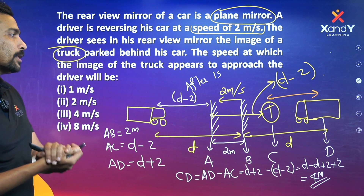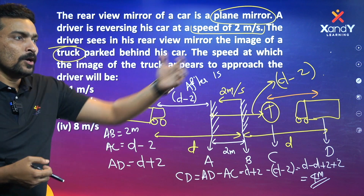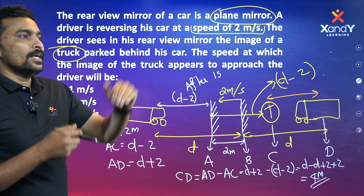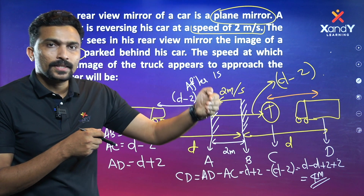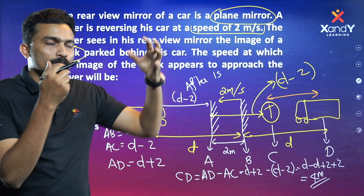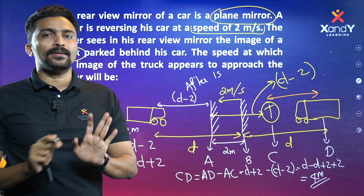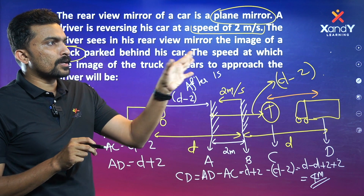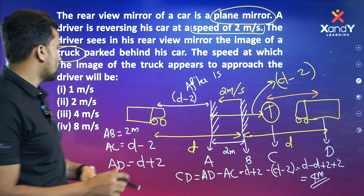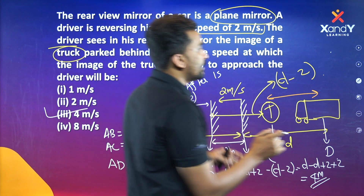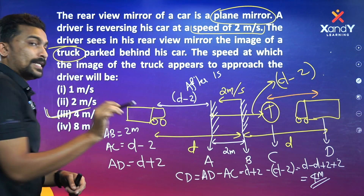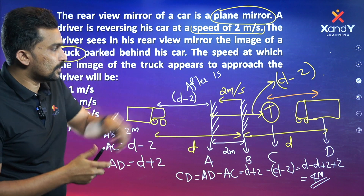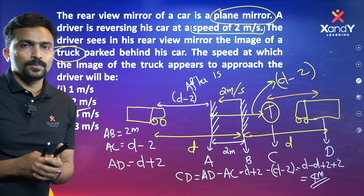So the answer is 4 meters in one second, which means the image approaches at 4 meters per second. Normally the mirror moves at 2 meters per second, but the answer is 4 meters per second. This is because when the mirror closes the distance, the image must also close the same distance — so the total change is doubled. The answer is option 3: 4 meters per second.